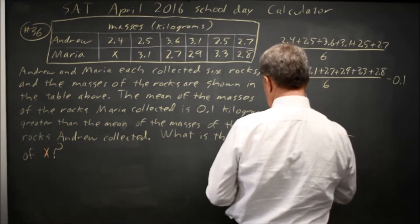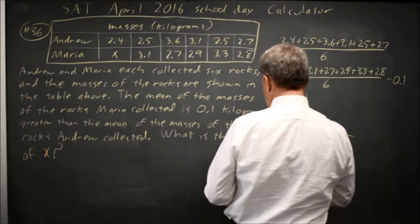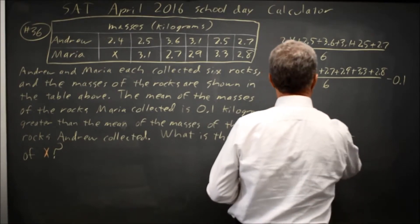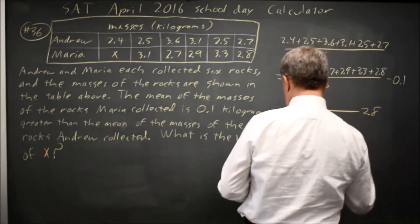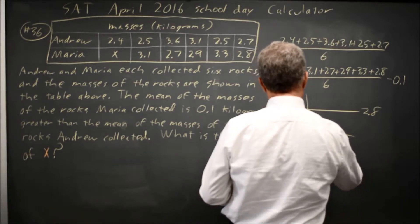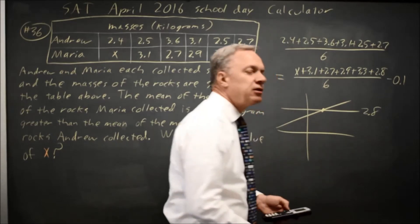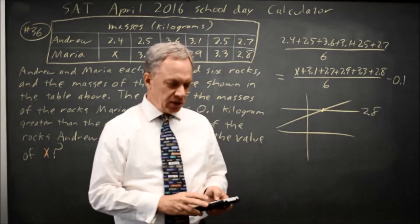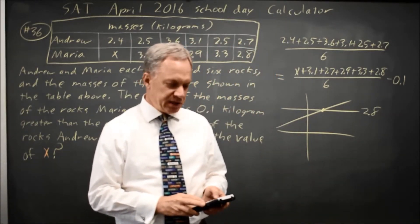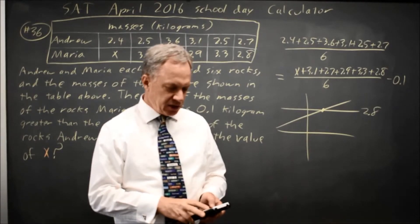My mean is 2.8 for Andrew, and then for Maria, I've got a line that looks something like this, and the x value where they intersect will be the mass of the missing rocks indicated by x.